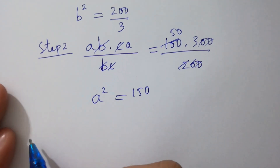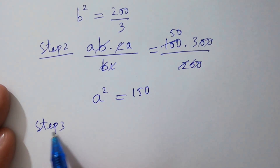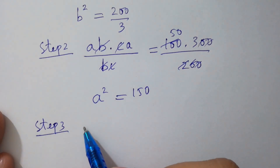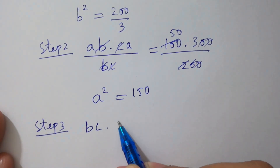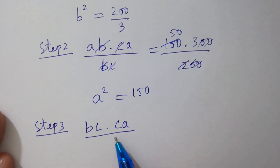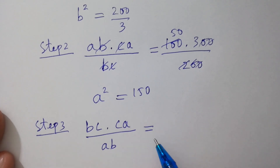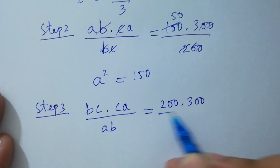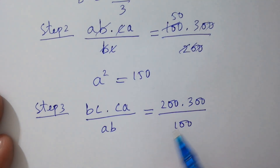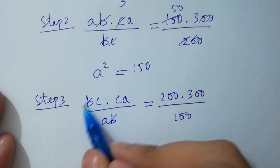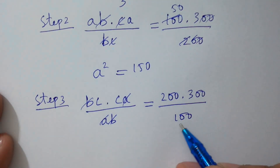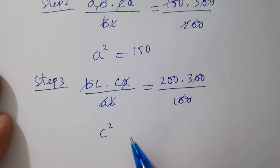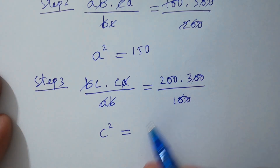Step 3: multiply the second equation by the third equation — bc times ca — divided by ab. bc is 200, ca is 300, divided by ab which is 100. Here b and b cancel, a and a cancel. We get c squared equals 200 times 3, which is 600.